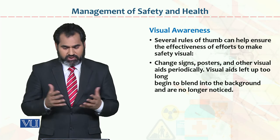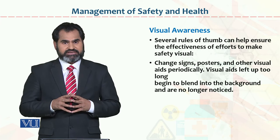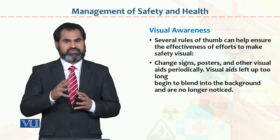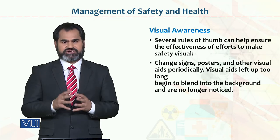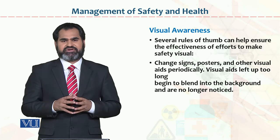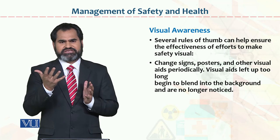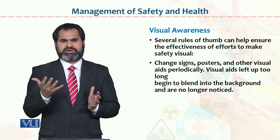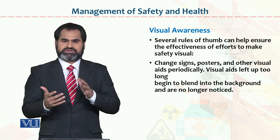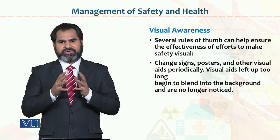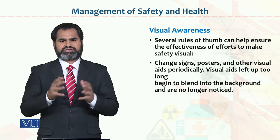Visual awareness. Several rules of thumb can ensure the effectiveness of efforts to make safety visual. This is a very important word: safety visual — meaning safety measurements should be visible. What is invisible is not a good thing; visualize it and make it visible. Performance is visible; uncertain situations are visible; but the planning behind it is invisible. In the same way, make your safety measures visible and ensure employees practice them.